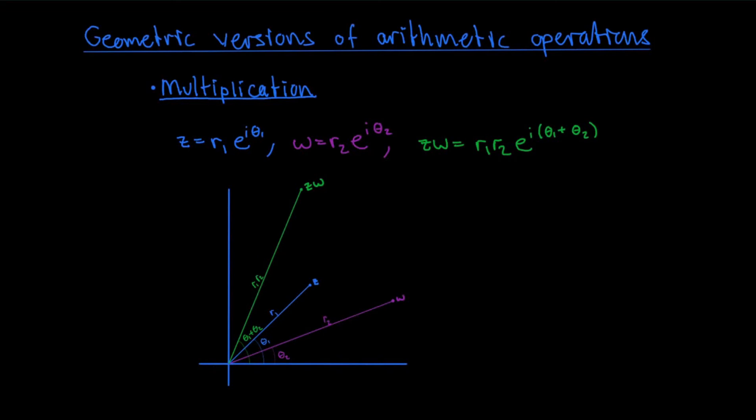How about multiplication? Well, to understand geometrically what multiplication is doing, it's better to write the numbers z and w in polar coordinates, z equals r1 times e to the i theta 1, and w equals r2 times e to the i theta 2. When you do that, it's clear that when you multiply these two numbers together, what you get is just r1 times r2 times e to the power i times theta 1 plus theta 2.